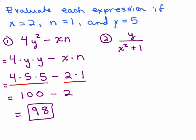So the value of this expression is 98 when x equals 2, n equals 1, and y equals 5. Now, you might not have all the variables in a particular expression. For instance, in number 2, there's a y and there's an x, but there's no n. We do exactly the same thing. I'm going to start off by writing x squared as x times x plus 1. Now, this is a suggestion, you don't have to do that.